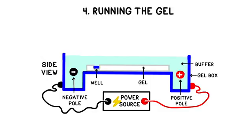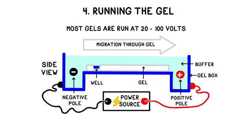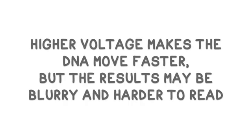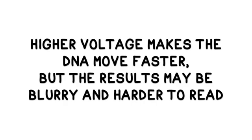To run the gel, we expose it to an electrical field. The amount of voltage varies, usually from 20 to 100 volts, depending on the size of the fragments you're using. The more voltage you apply, the faster the fragments will move, and the sooner you can analyze the results, but the results are often less clearly visible.